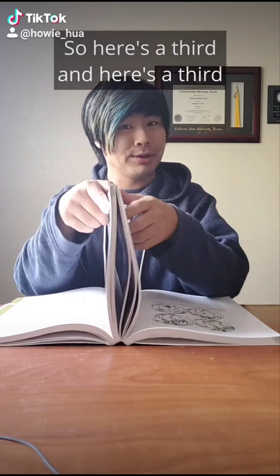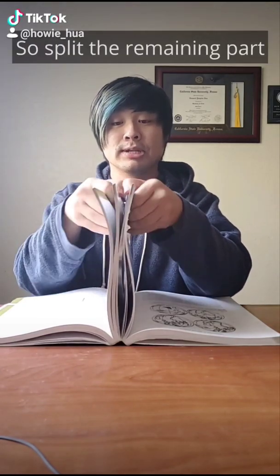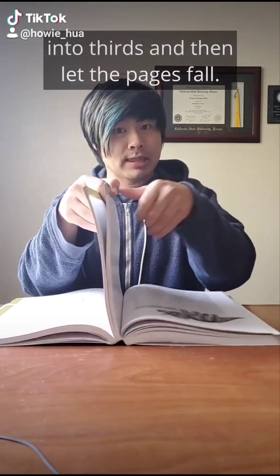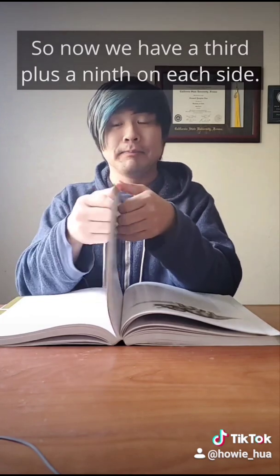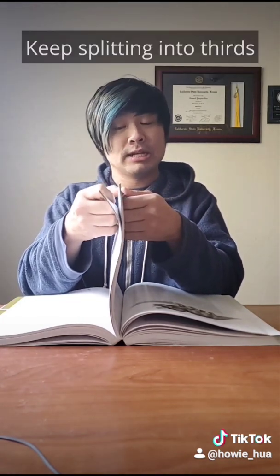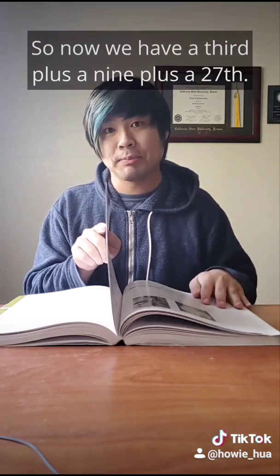So here's a third and here's a third and you keep continuing this. So split the remaining part into thirds and then let the pages fall. So now we have a third plus a ninth on each side. Keep splitting into thirds and letting the pages fall. So now we have a third plus a ninth plus a twenty-seventh.